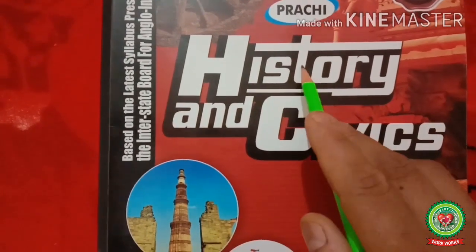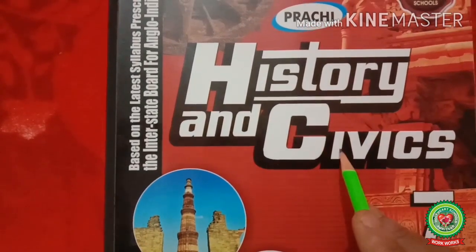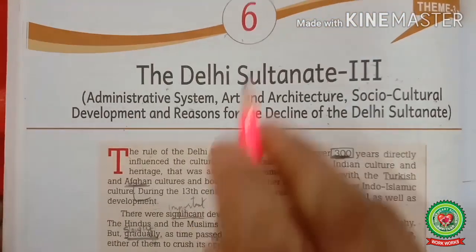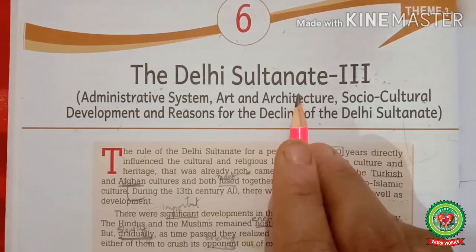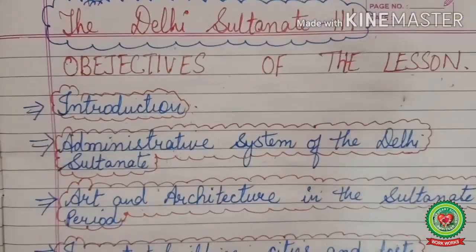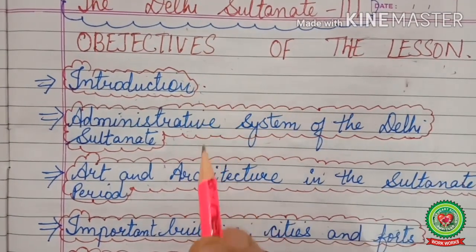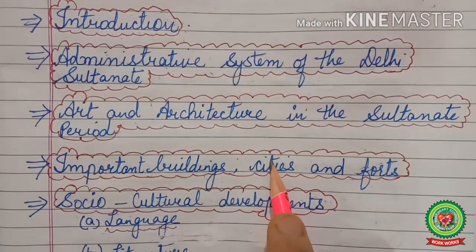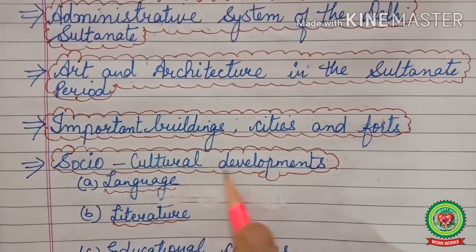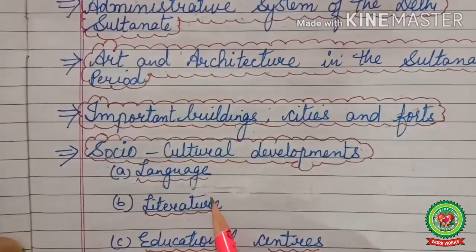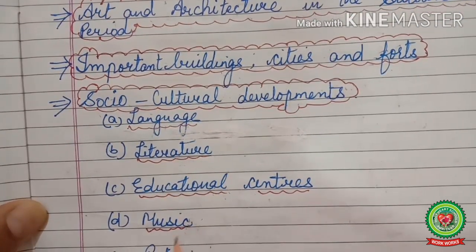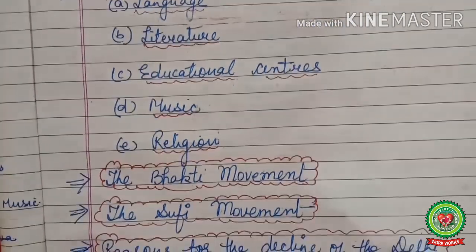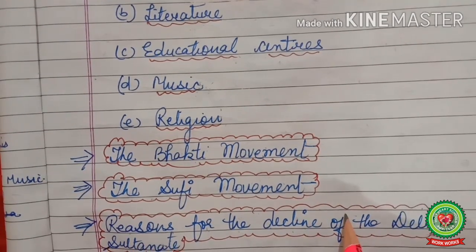Hello students, good morning. Welcome to History and Civics class. This is your book of History Civics Class 7. Take out page number 58, Lesson Number 6: The Delhi Sultanate 3. In this we will cover: introduction, administrative system of Delhi Sultanate, art and architecture in the sultanate period, important buildings, cities and forts, social culture development, language, literature, educational centers, music, religion, the Bhakti movement, the Sufi movement, and the reasons for the decline of the Delhi Sultanate.